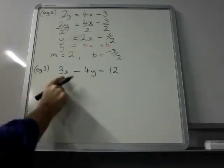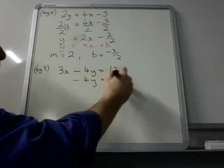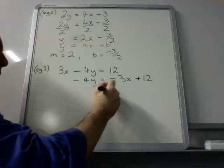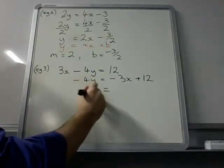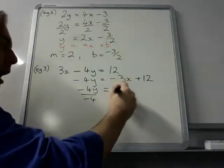First of all, I'm going to remove the 3x from the left-hand side. How? By subtracting 3x from both sides. I now need to eliminate the -4. How do we do that? Well, we divide every term by -4. Let's see what happens.